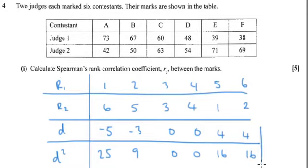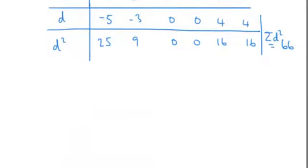And then we add those totals together to get sigma D squared. So 25, 9, and 2, 16, is 66. That tells us then we can use the formula which is 1 minus 6 sigma D squared divided by N bracket N squared take 1.